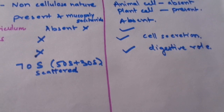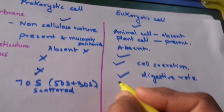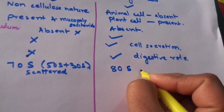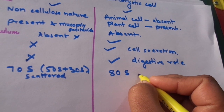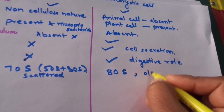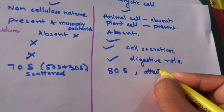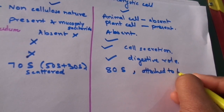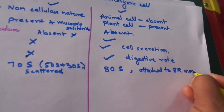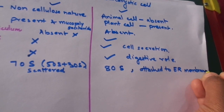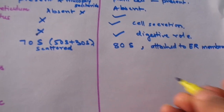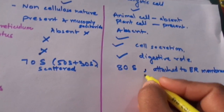However, in the case of the eukaryotic cell, the ribosome present is 80S. It is attached to the endoplasmic reticulum membrane, and in addition it is also found free in the cytoplasm.